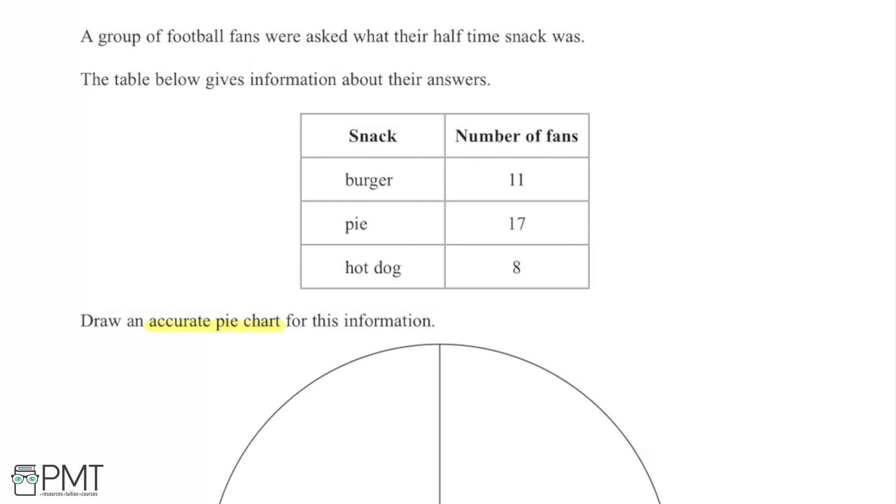So in order to work out the size of each angle we need to work out how many fans choose burger in proportion to the other snacks. So how many choose burger out of the total number of people and that's going to be the angle that represents those that choose burger. So if I start by working out the total number of fans here, we can take the 11, add on the 17 and the 8 and then we find that we have 36 fans in total.